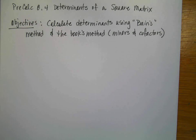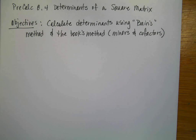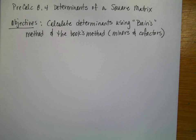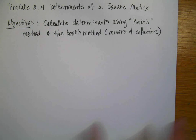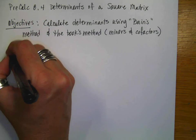Hello, math humans. We're going to do 8.4 today, talking about the determinants of the square matrix. Our objectives are to calculate determinants using two different methods. One, for lack of a better term, I'm calling it Bain's method — a method I originally learned how to do determinants with. And then we're going to learn the official method, which uses minors and cofactors. You will be responsible to know both methods, and I will ask you that on an assessment.